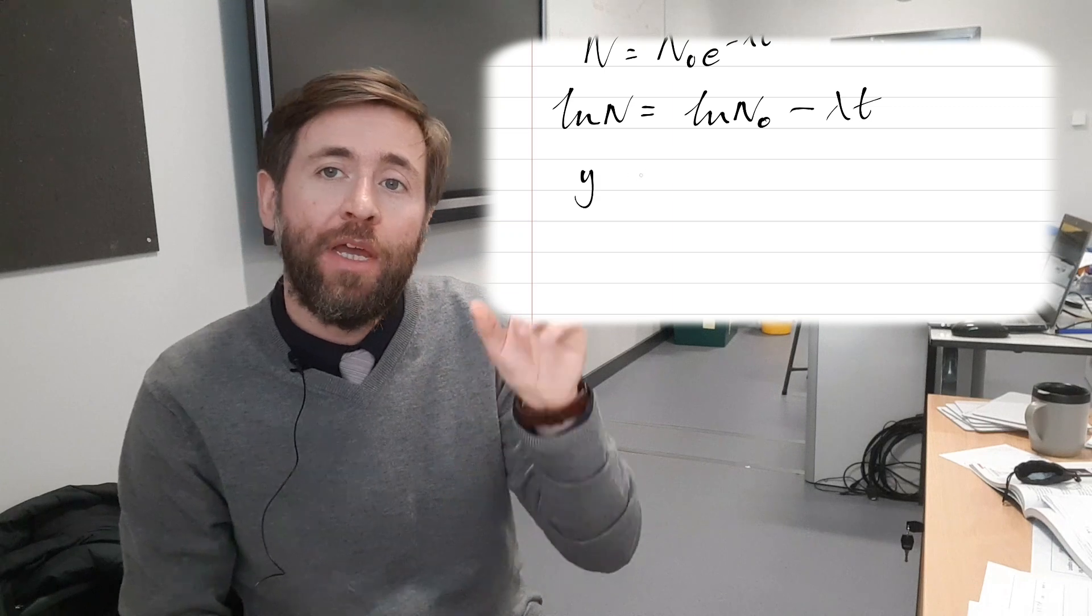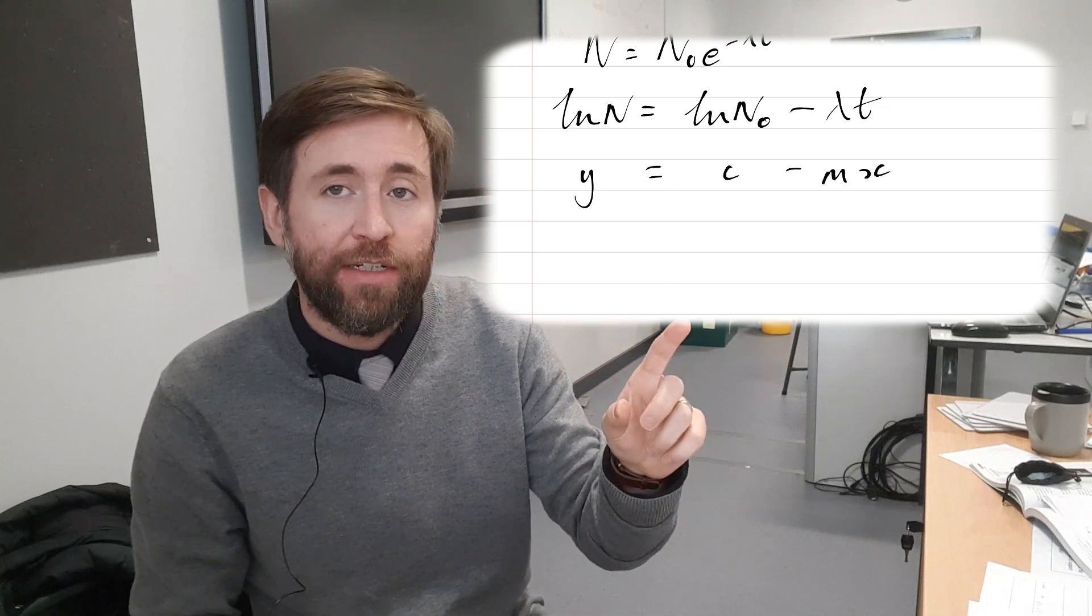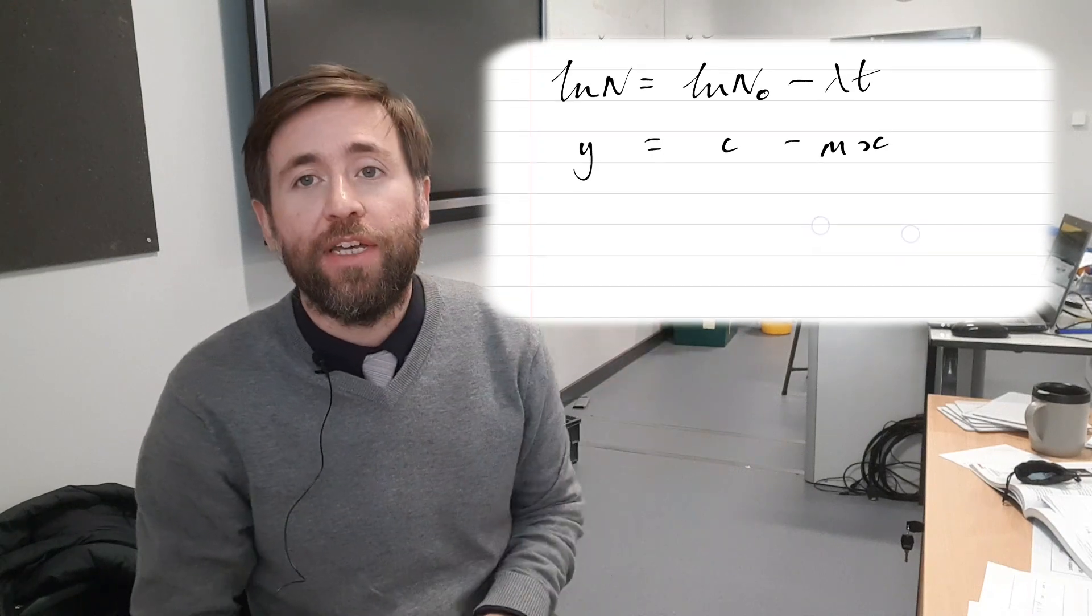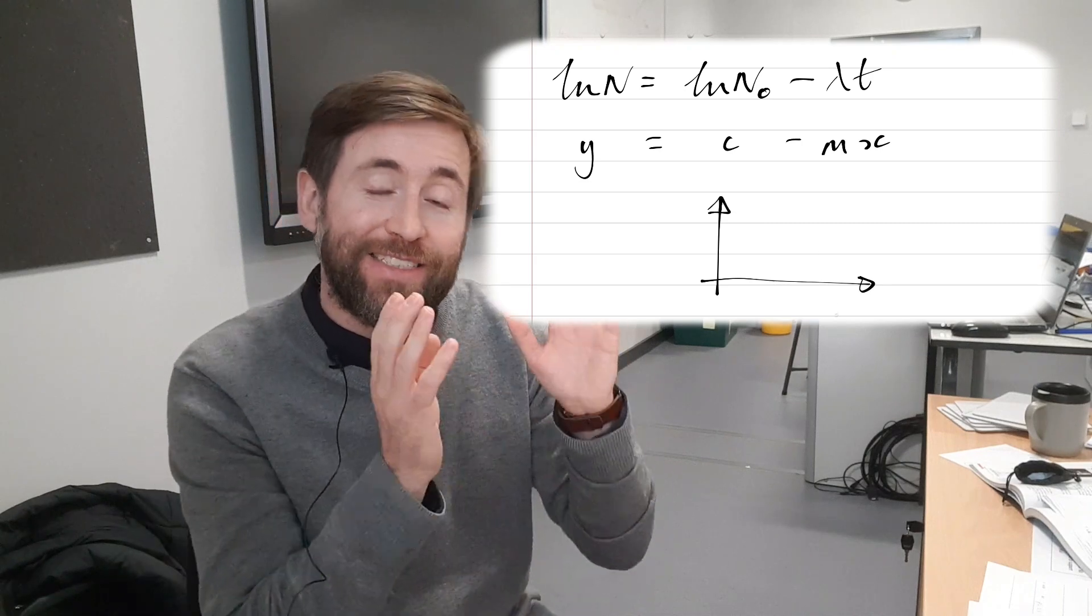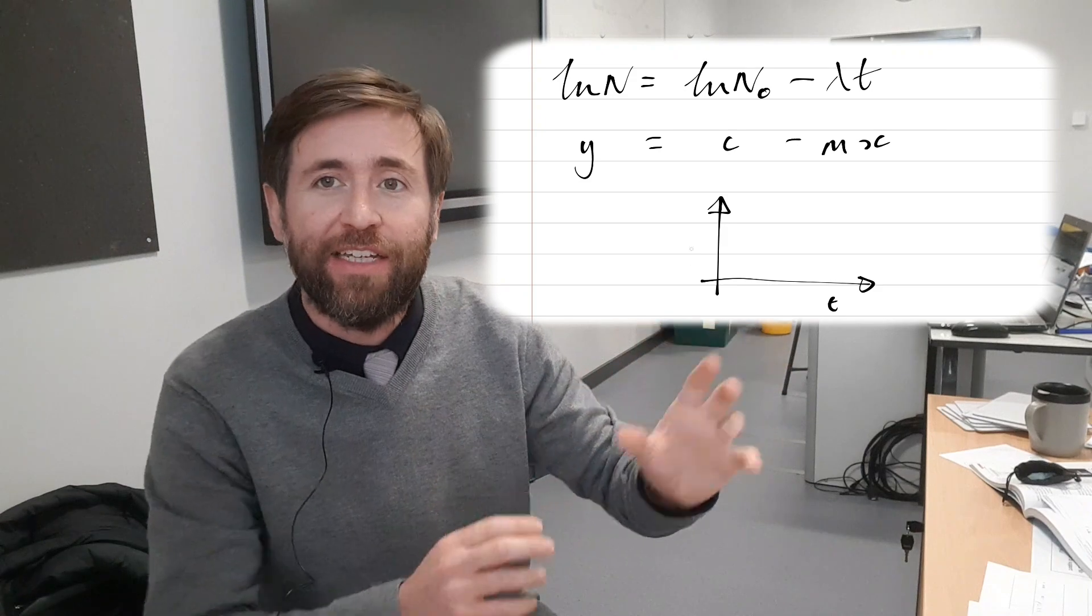So y is log n, log n0 is the y-intercept, minus lambda is the gradient, and T is the x variable. Again, we can just log our number of undecayed atoms, log our y variable, and we can plot that against T. And the gradient of that is going to be lambda, or the decay constant.